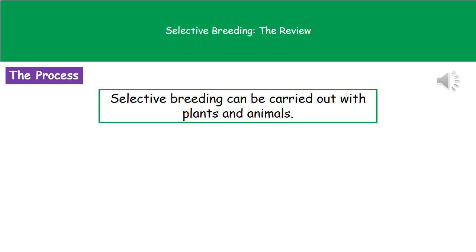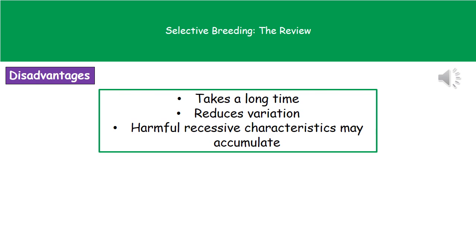This process can be carried out with both plants and animals, always in the same way: selecting organisms for their characteristics, breeding them together, and then selecting the offspring that have the desired characteristics and letting them breed together — repeated over a long period of time.